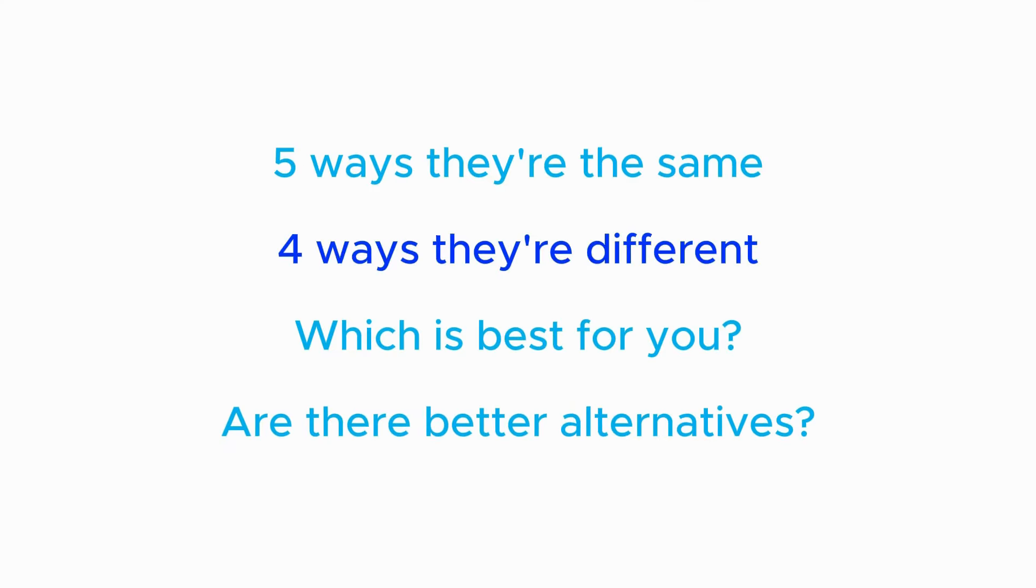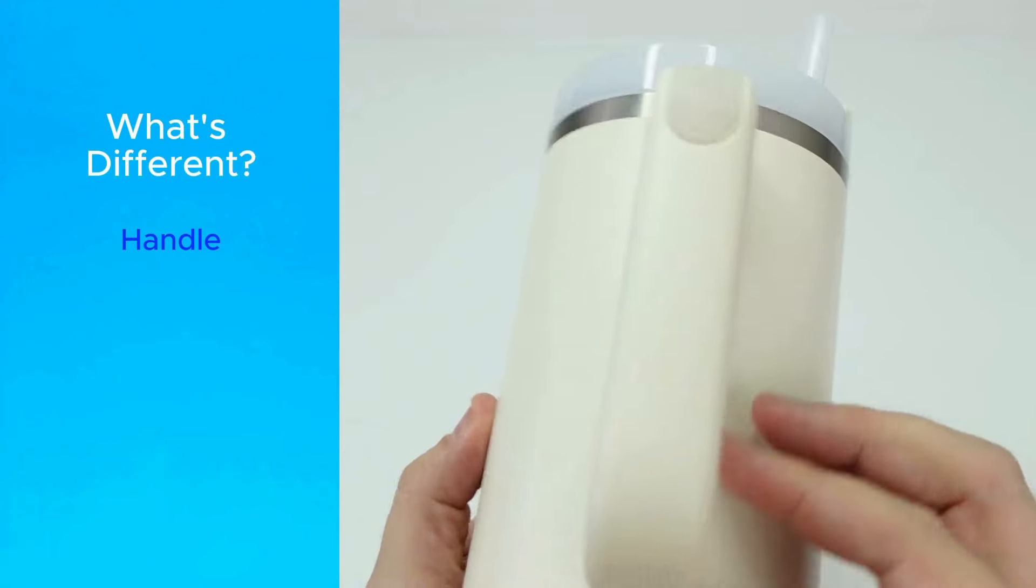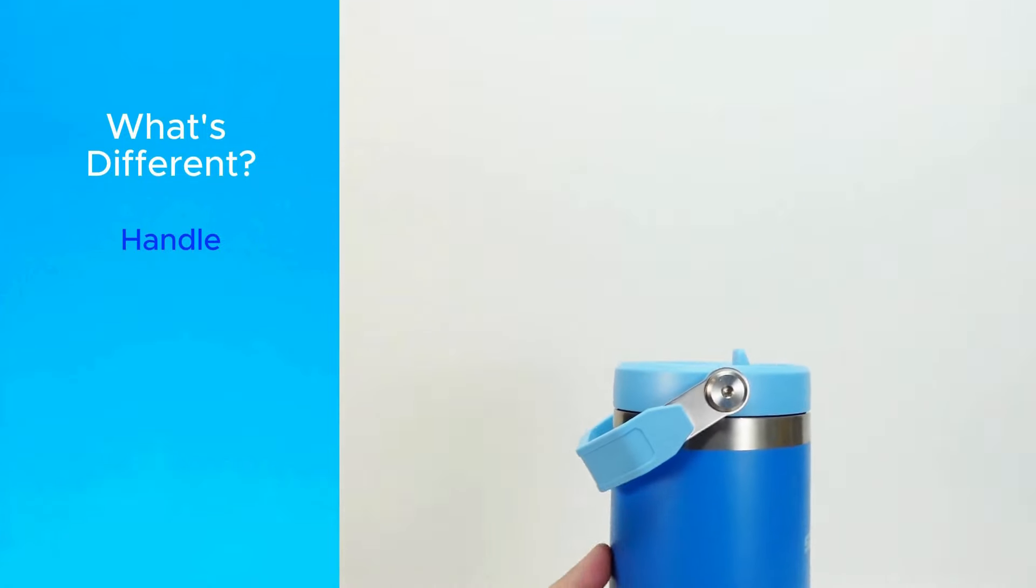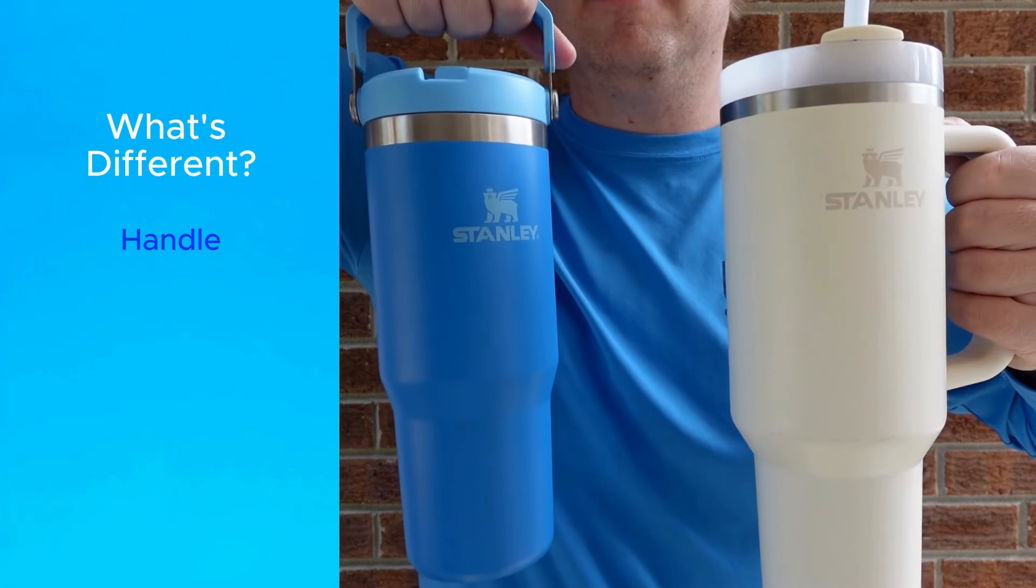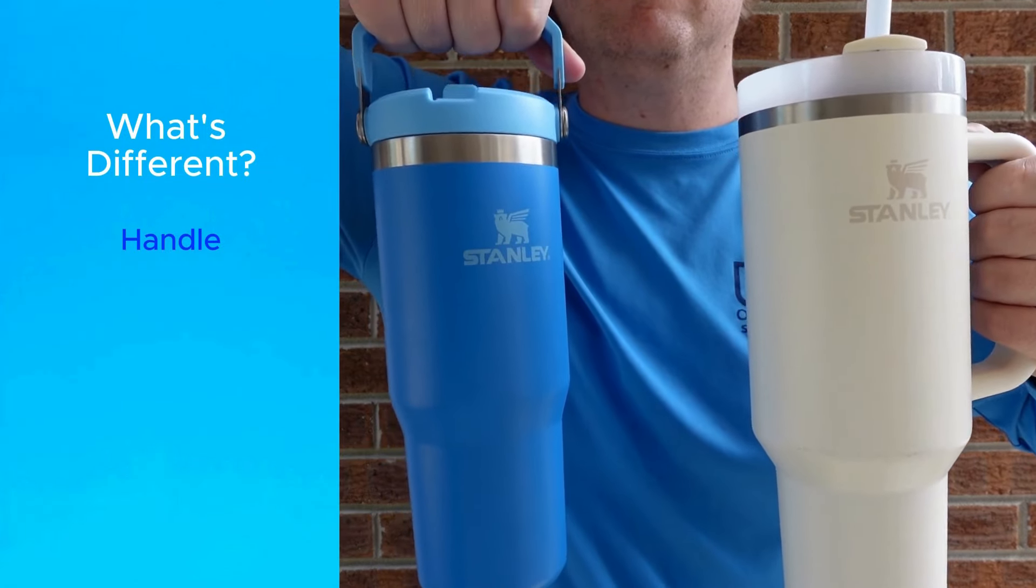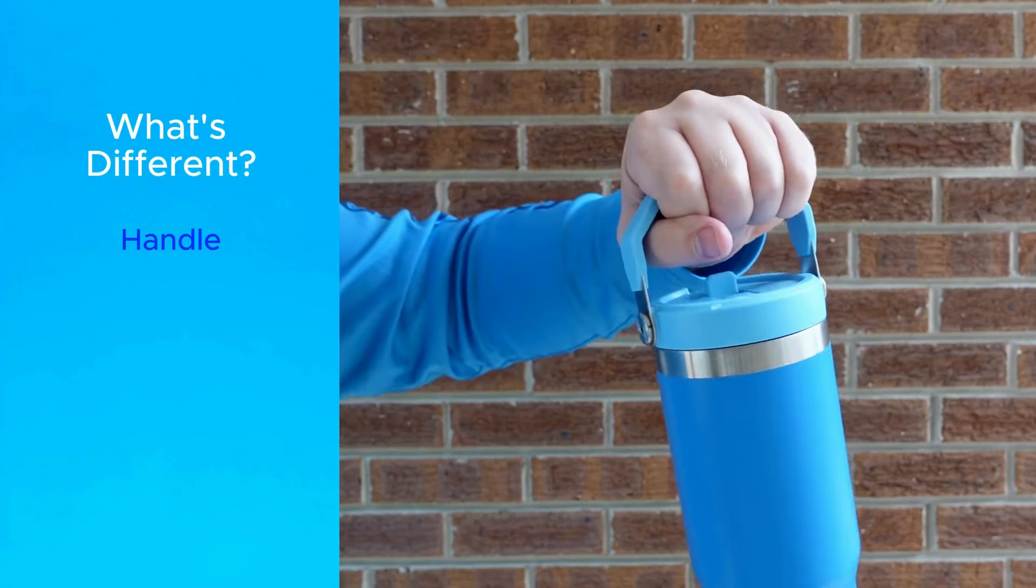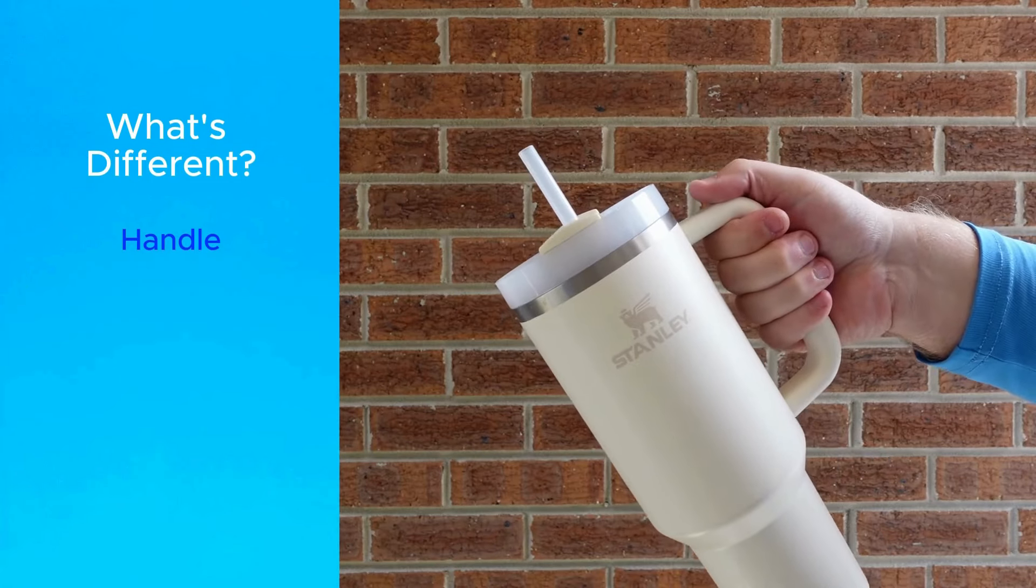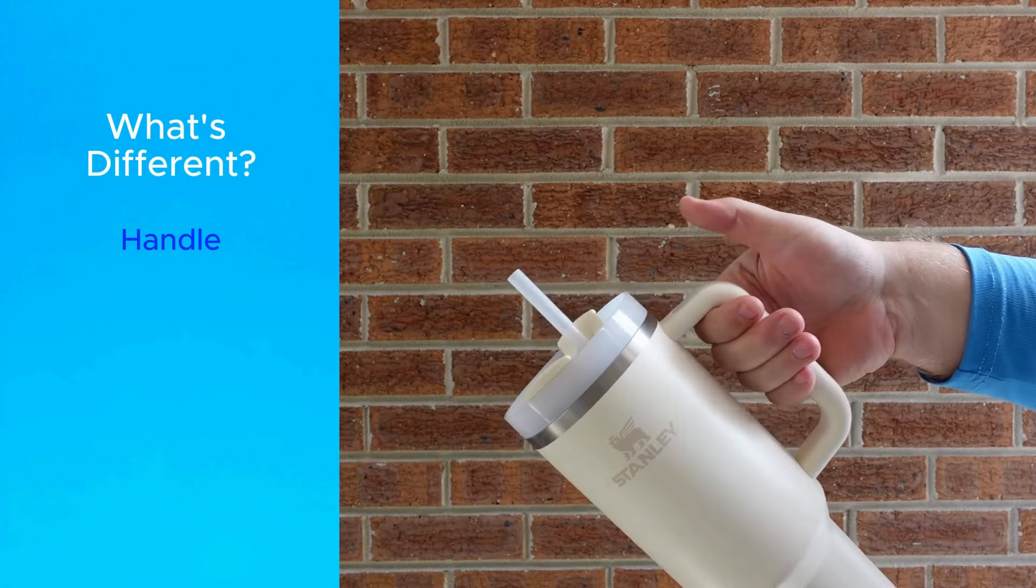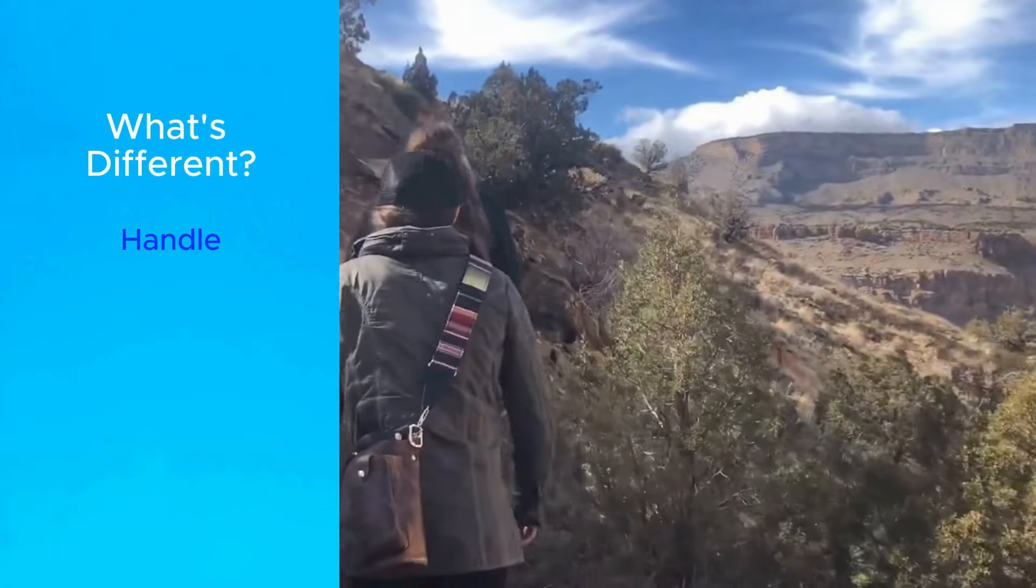Now let's look at the four main differences. Number one is the most obvious, the handle. Quenchers have a rigid side-mounted handle, and Iceflows have a rotating top-mounted one. Both are easy and comfortable to hold even for people with bigger hands. The Quencher handle is easy to grab when you want to take a sip, and the Iceflow is designed more for when you're on the go. For this reason, Quencher can be a better option for use in the car or at the home or office, but Iceflow can be a better option when you're hiking or walking.